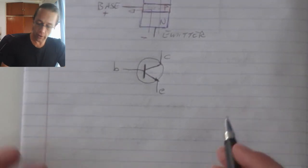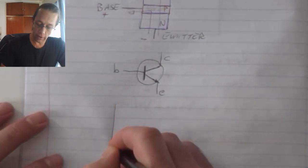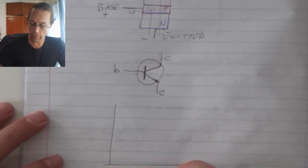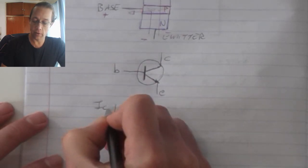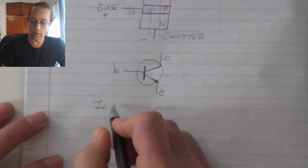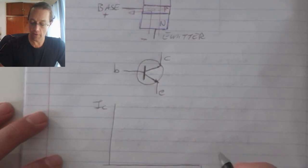To explain the operation graphically, we can look at the characteristic curve where we've got the voltage across the collector-emitter indicated on the horizontal axis and the current flow out of the collector pin on the vertical axis.